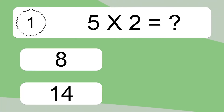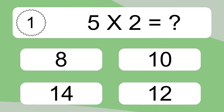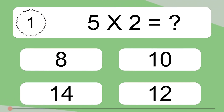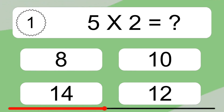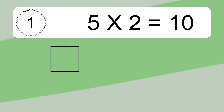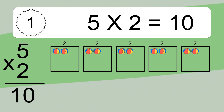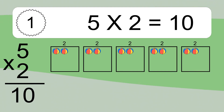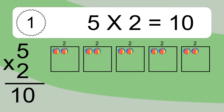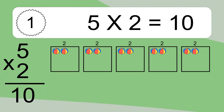5 times 2 equals what? 5 times 2 equals 10. We have 5 boxes, and each box has 2 colorful balls inside. If you count all the balls in all the boxes together, you will have 5 times 2 balls. This equals 10 balls.